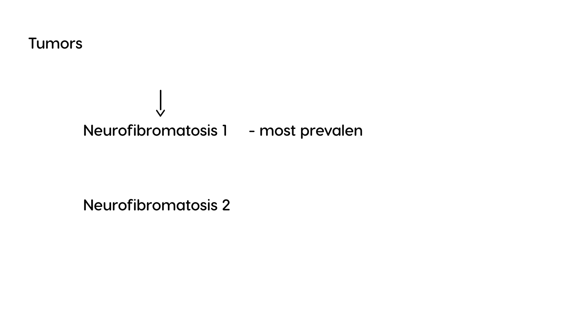Neurofibromatosis is the topic, and this disorder can cause various benign and malignant tumors. There are two types: neurofibromatosis type 1 and neurofibromatosis type 2. Type 1 is the most prevalent and usually presents with cutaneous manifestations, whereas type 2 involves central nervous system tumors. The most common CNS tumors in type 2 are acoustic neuromas, which can lead to deafness.